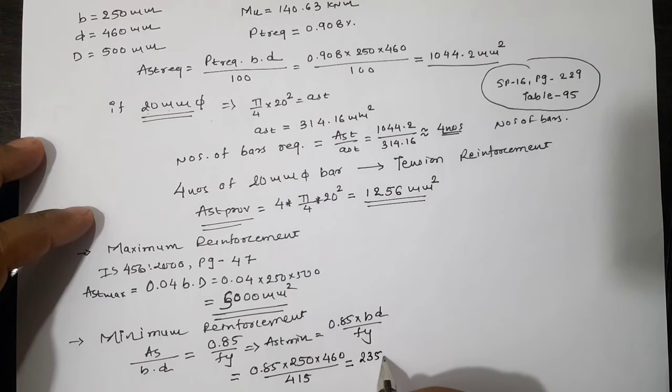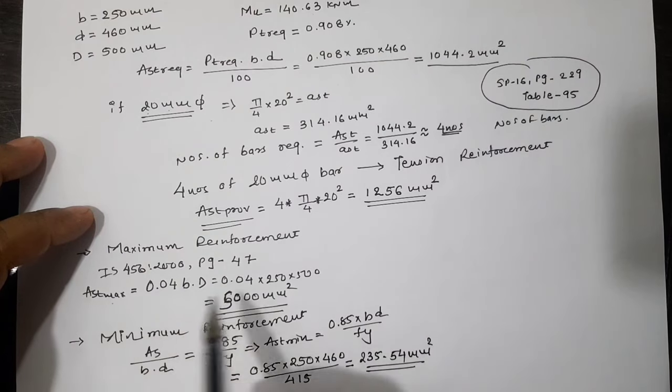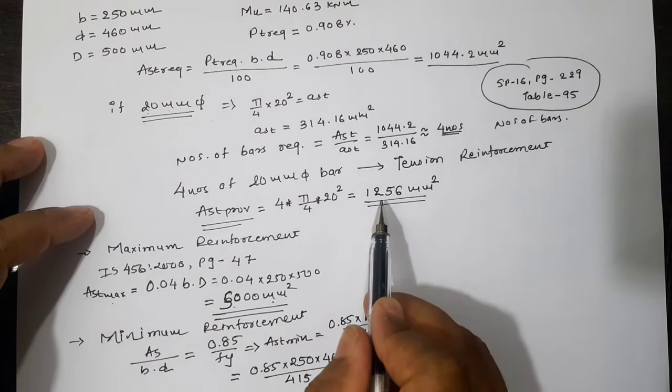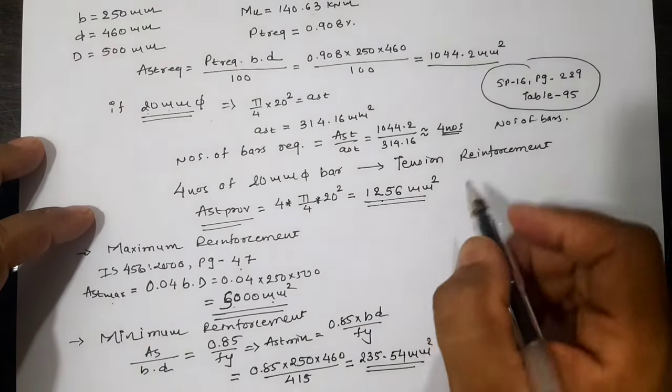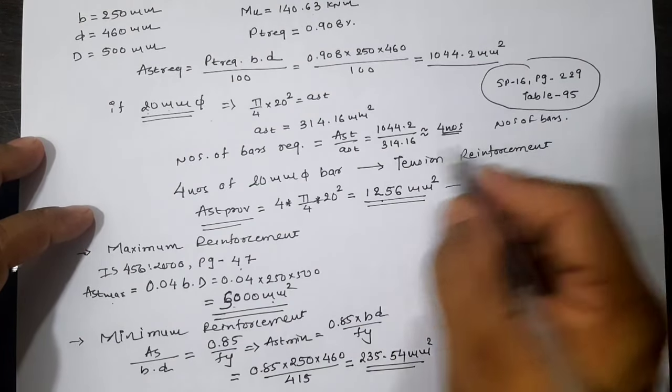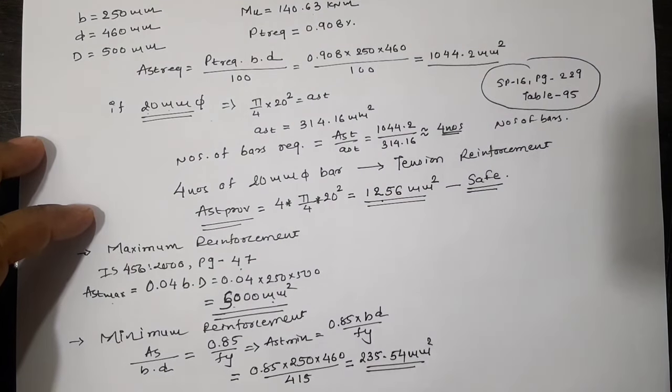So minimum reinforcement is 255.54 mm², maximum is 5000 mm², and we have provided 1256 mm², which is in between minimum and maximum. So our design is safe for the maximum and minimum reinforcement.